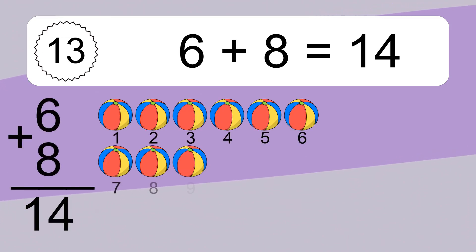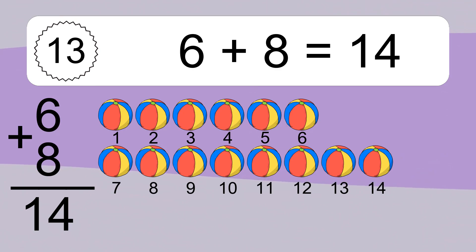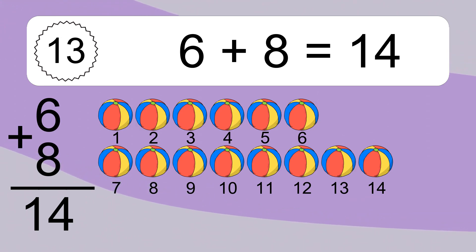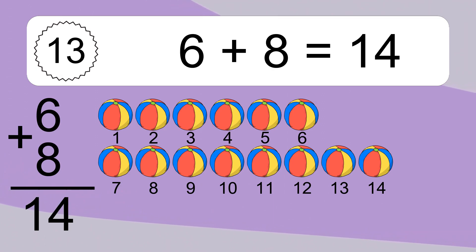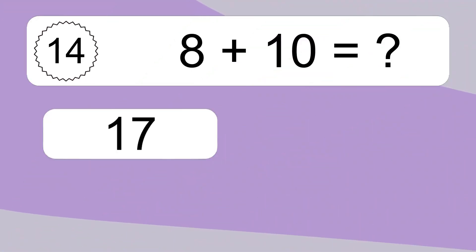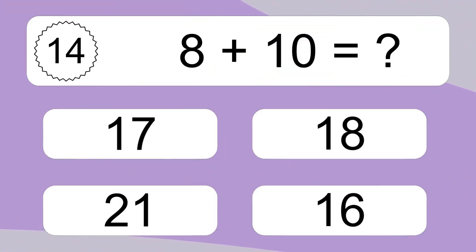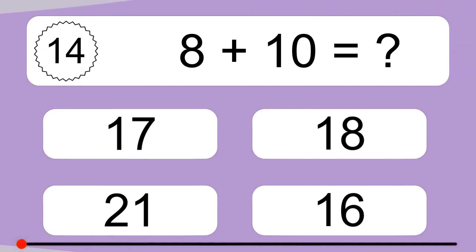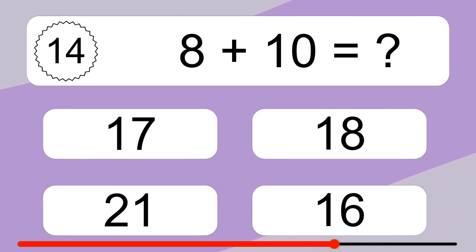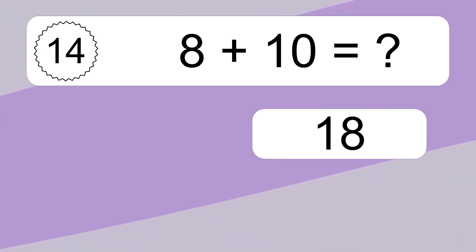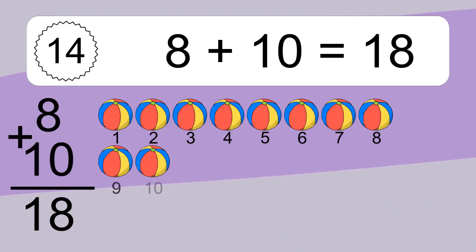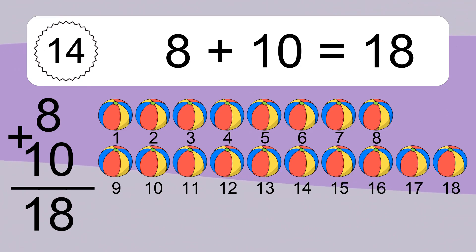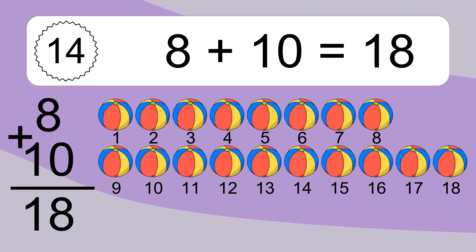6 plus 8 equals 14. Let's count it. 1, 2, 3, 4, 5, 6, 7, 8, 9, 10, 11, 12, 13, 14. 8 plus 10 equals what? 8 plus 10 equals 18. Let's count it. 1, 2, 3, 4, 5, 6, 7, 8, 9, 10, 11.